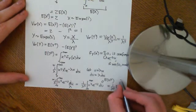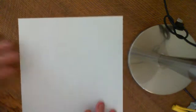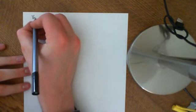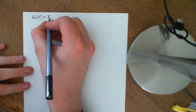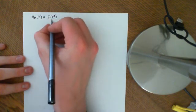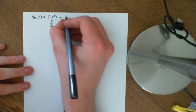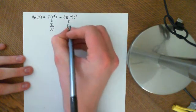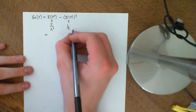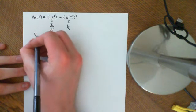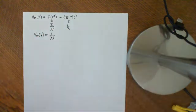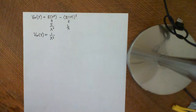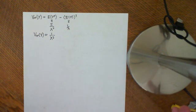That integral is exactly the one we computed for E[x²] in the standard case, which equals 2. So E[y²] equals 2 over lambda squared. Then Var(y) equals E[y²] minus (E[y])² equals 2 over lambda squared minus (1/lambda)² equals 2 over lambda squared minus 1 over lambda squared, which equals 1 over lambda squared. We do get the same result for the variance of a general exponential distribution whether we compute it directly or use the relationship y equals x divided by lambda.